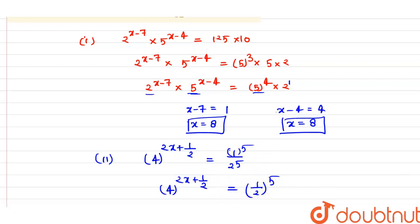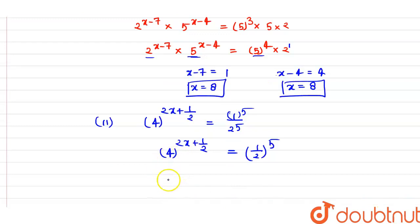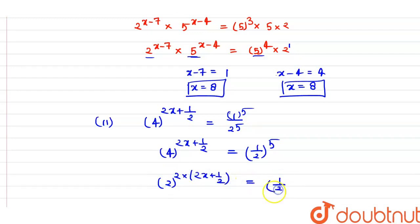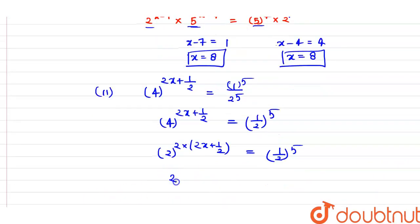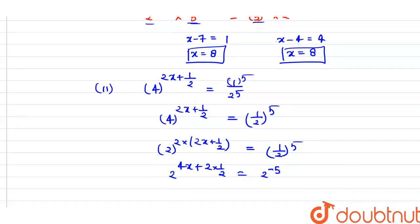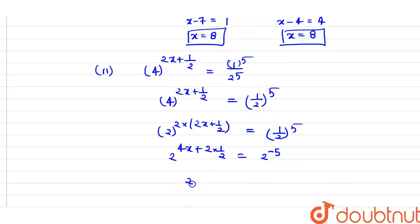We write 4 as 2 raised to the power 2. So the left side becomes 2^(2 times (2x + 1/2)) equals (1/2)^5, which is 2^(4x + 1) equals 2^(minus 5).